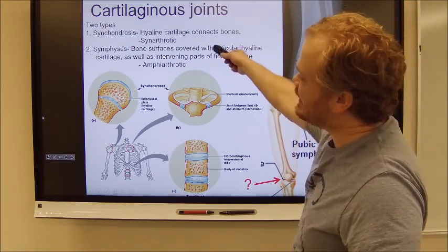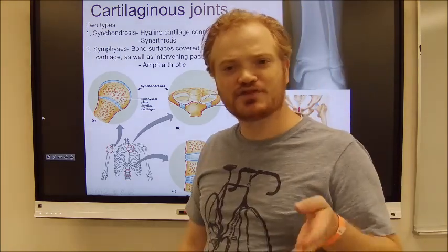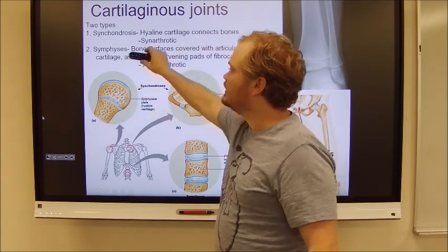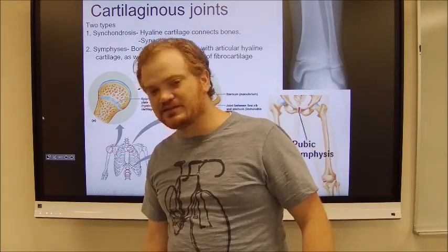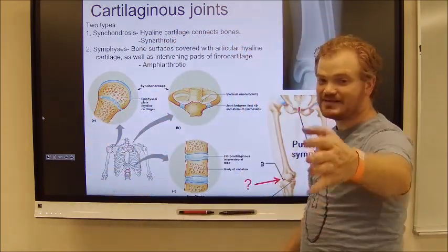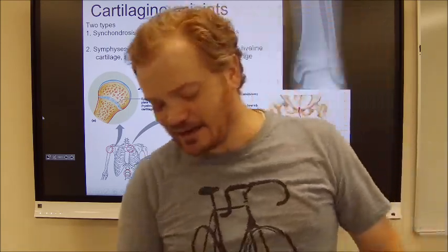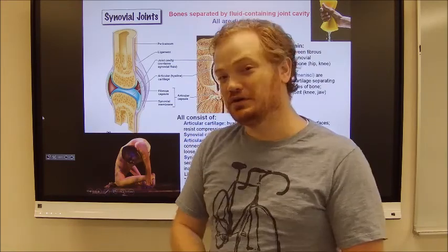So synchondrosis uses hyaline cartilage — like in the ribs, or alternatively your growth plates, your epiphyseal plates, would be considered synchondroses. By comparison, a symphysis is going to use some fibrocartilage — like your intervertebral discs and your pubic symphysis. But you might say, don't your knees contain fibrocartilage? Yes, they do — your knees have meniscus, which is fibrocartilage — but your knees are not cartilaginous joints. Your knees are way more complicated. Your knees are synovial joints.